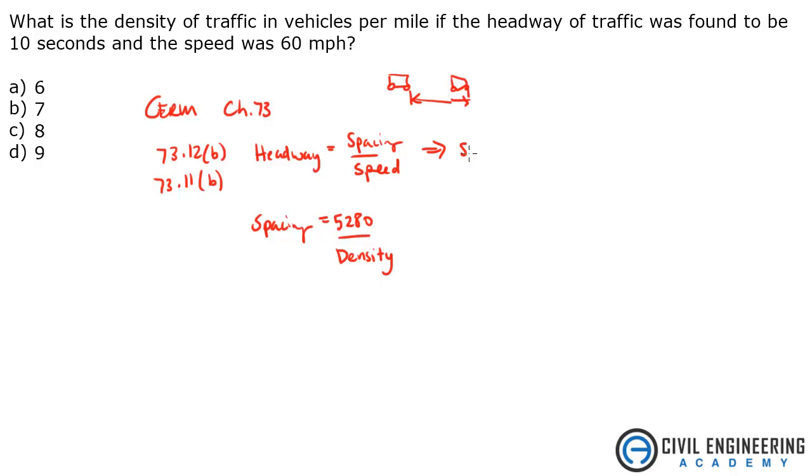So spacing is going to equal 10 seconds times 60 miles per hour. And we are going to convert that to feet per second and then you are multiplying by seconds so you are going to be left with feet.